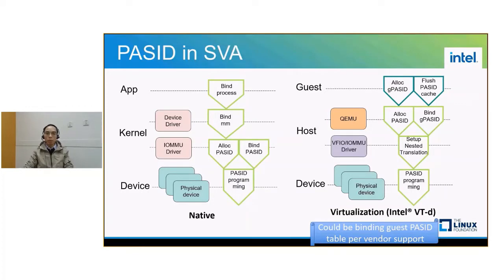After that, the device is able to access the processor virtual address space with the PASID. When it comes to virtualization, the guest follows the same steps to set up SVA. However, the hypervisor needs to trap guest's specific operations in order to set up nested translation for SVA. For example, Intel VT-d requires trapping guest PASID allocation and PASID cache flush to set up IOMMU nested translation for each PASID on the host side. For vendors which allow the guest to maintain the PASID table under nested translation, it needs to trap the guest PASID table initialization to bind the whole guest PASID table to host.